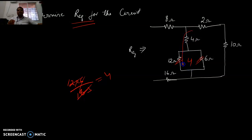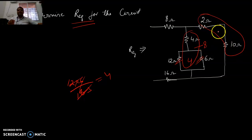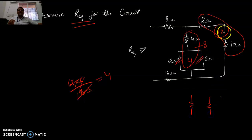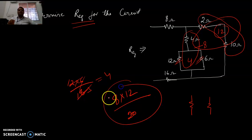Now these 4 and 4 are in series — replace by 8. This 4 and 4 are in series, giving 8. Now this 8 and 12 are in parallel: 8 times 12 divided by (8 plus 12) equals 20, and we can solve from there.